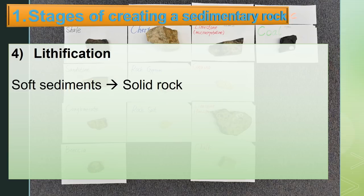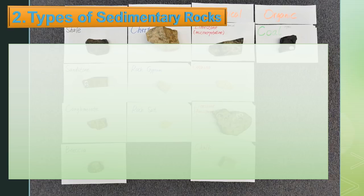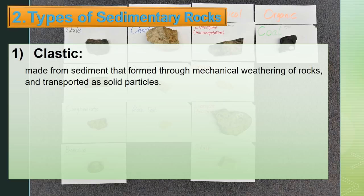Lithification is the process of turning soft sediments into solid rock. There are four types of sedimentary rocks. First, clastic — made from sediment that formed through mechanical weathering of rocks and transported as solid materials.